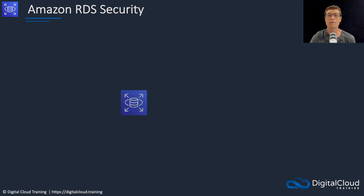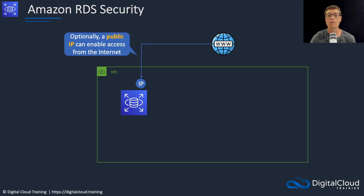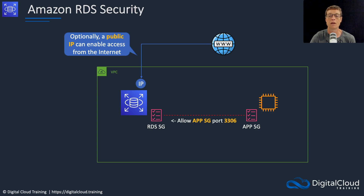Let's have a look at the various ways we can protect access to our databases. RDS will run within a VPC, so you can have your endpoint as a public or private endpoint. We have an IP address here as a public endpoint, so we're able to access our database straight from the internet. We can also have security groups attached to our database, and our application servers might also have security groups. If we're connecting via an application server rather than directly to the database, we're using a security group to control the port that we're allowing our application to access the database on.